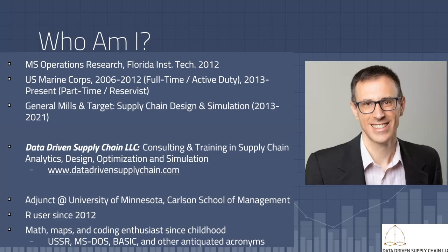A little about myself: I have a math and science background — a bachelor's in physics and a master's in operations research. I started my career in the military, on active duty in the Marine Corps for several years, and have been a reserve marine part time for about 10 years since. After the military, I worked in supply chain design and simulation for eight years at General Mills and Target in Minneapolis. I left the corporate world last summer to found my consulting firm. I also teach statistics as an adjunct at the University of Minnesota Business School. I've been an R user for 10 years since 2012, and I've found the language to be an ever increasingly versatile tool. I've loved maps, math, and programming since I was a little kid, so I'm fortunate to have found a career that merges these interests.